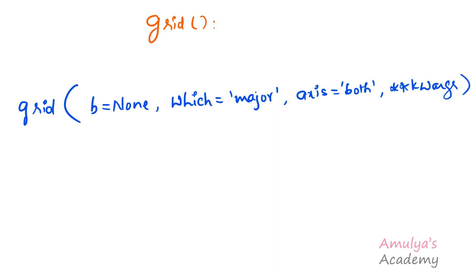The first parameter is b, with a default value of None. It is a boolean value — you can take true, false, or none for the b parameter. If b is true, it will show the grid lines. If b is false, it won't show the grid lines. If b is none and a keyword argument is present, it will set b as true and show the grid lines. If b is none and no keyword arguments are mentioned, it toggles the visibility of the grid lines — toggling between hide and show.